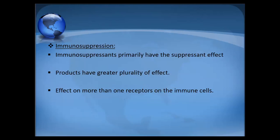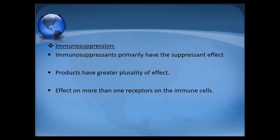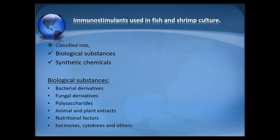Immunosuppression refers to substances which suppress our immune system, primarily having a suppressant effect with greater plurality of effect. Immunostimulants used in fishes and shrimp culture are divided into two categories: one is of biological origin and the other is synthetic chemicals. Synthetic means prepared within a controlled condition in a lab.